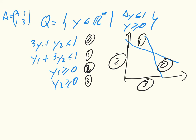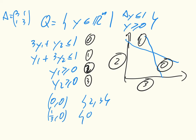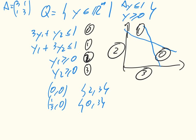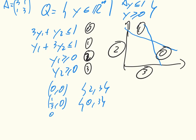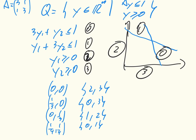So this gives us: vertex (0, 0) has labels 2 and 3; vertex (1/3, 0) has labels 0 and 3; vertex (0, 1/3) has labels 0 and 1. This is an important exercise, being able to label the vertices of your polytope, and what we're going to see next is how we can use this to find Nash equilibrium.